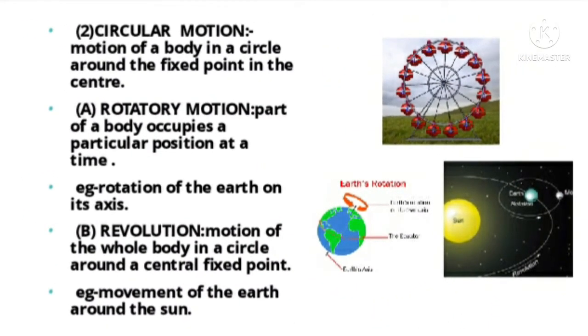Circular motion is the motion of a body in a circle around a fixed point in the center. One fixed point in the center, and the body moves in a circle. First is rotatory motion. Rotatory motion is when a part of a body occupies a particular position at a time. For example, the rotation of the earth on its axis.